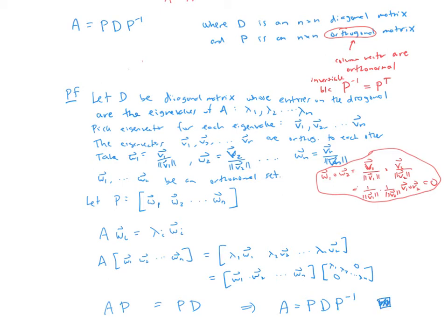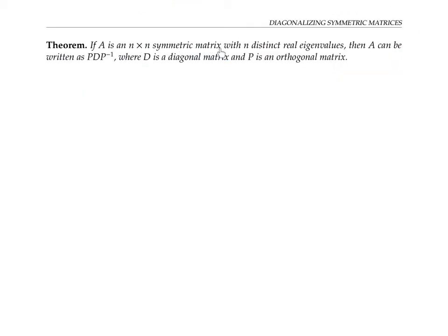Because we started with a symmetric matrix and just rescaled our eigenvectors to have length one, we ended up with an orthogonal matrix for P. So what we proved is: if A is an n by n symmetric matrix with n distinct real eigenvalues, then A can be written as P D P inverse where D is diagonal and P is orthogonal. In fact, we don't need to state that the eigenvalues are real, because symmetric matrices automatically have real eigenvalues. Furthermore, it turns out — though I won't prove it here — that we don't even need distinct eigenvalues; A can still be orthogonally diagonalized even if eigenvalues repeat.